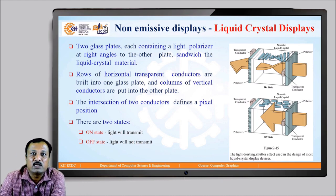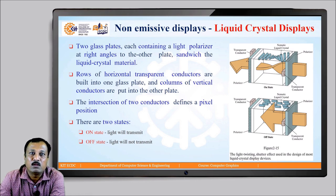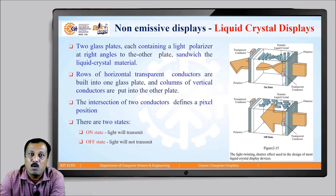There are two glass plates, each containing a light polarizer at right angles to the other plate, sandwiching the liquid crystal material. As shown in the figure on the left side of the screen, the two glass plates are mounted with polarizers aligned perpendicular to each other, with liquid crystal material sandwiched in between. Rows of horizontal transparent conductors are placed on one glass plate and columns of vertical conductors on the other, positioned perpendicular to each other. The intersection of the two conductors defines each pixel position.